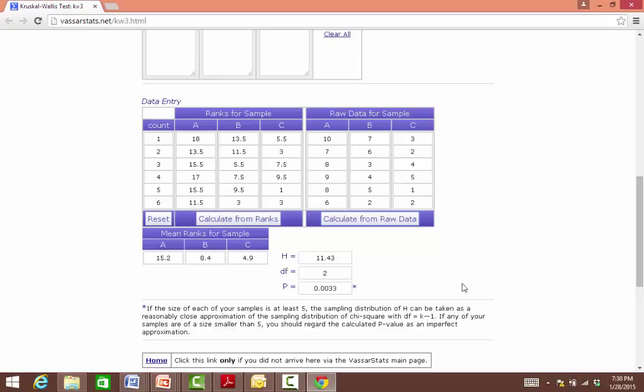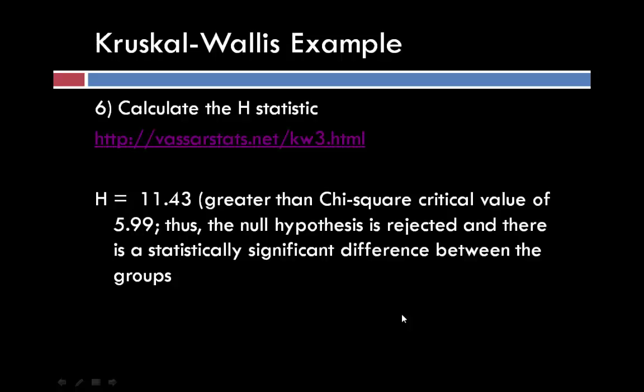Just to recap: H-value of 11.43 is greater than our chi-square critical value. We reject the null hypothesis and can state that there is a statistically significant difference between the three groups. In the next set of lectures, we are going to look at the Friedman test, so stay tuned for that.